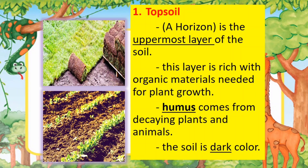First is the topsoil, or the A horizon, which is the uppermost layer of the soil. This layer is rich with organic materials needed for plant growth. Humus comes from decaying plants and animals. The soil is dark in color.